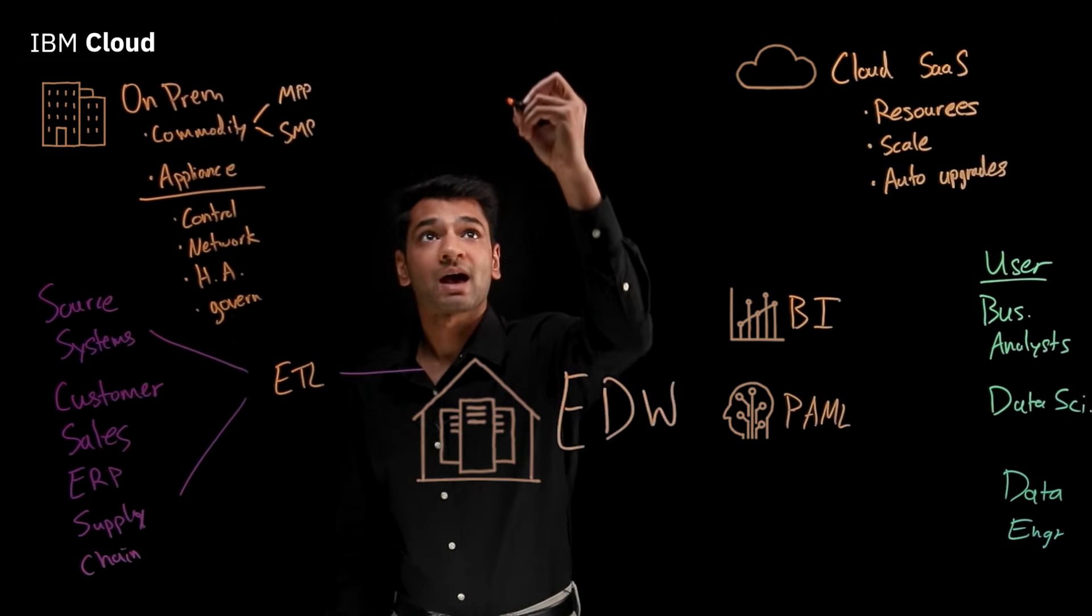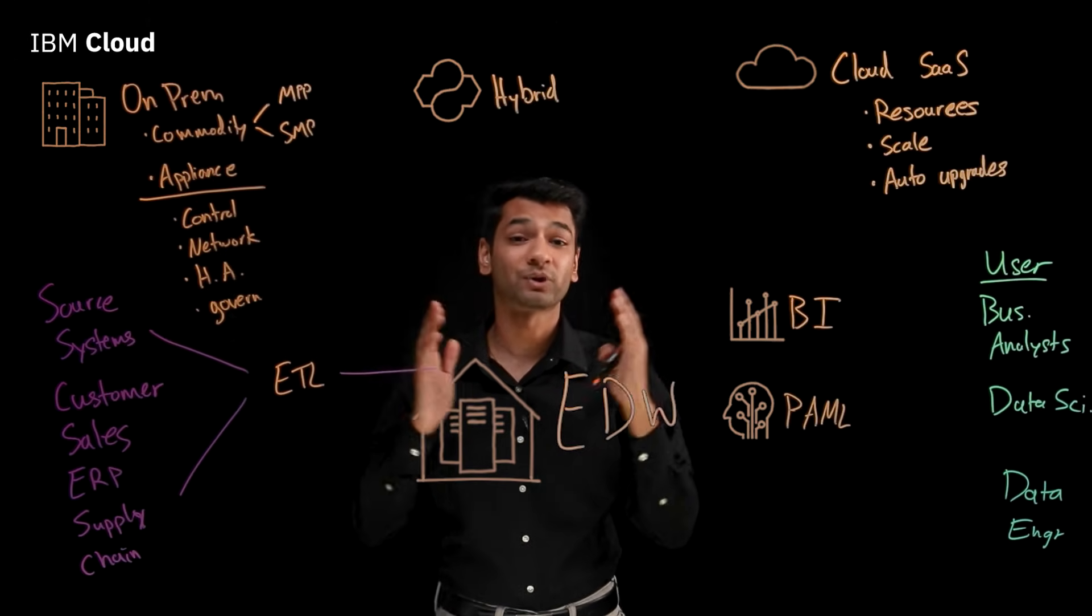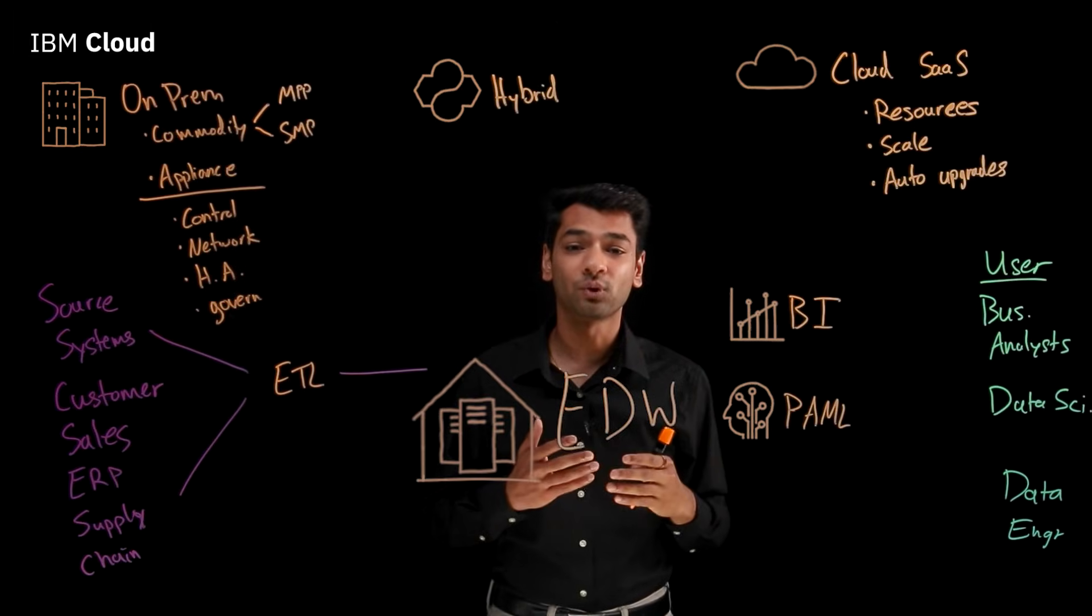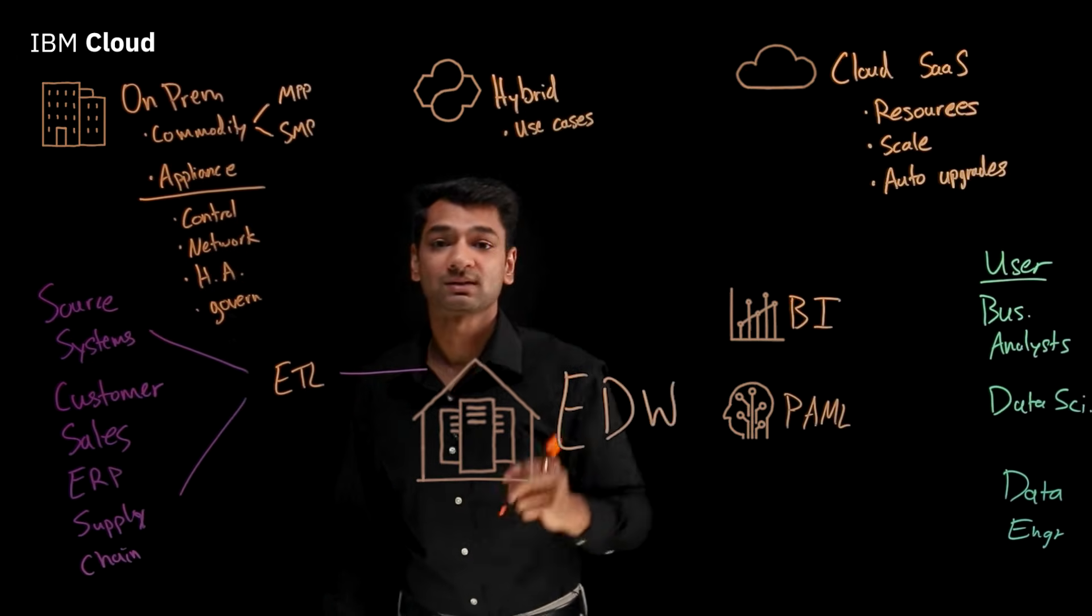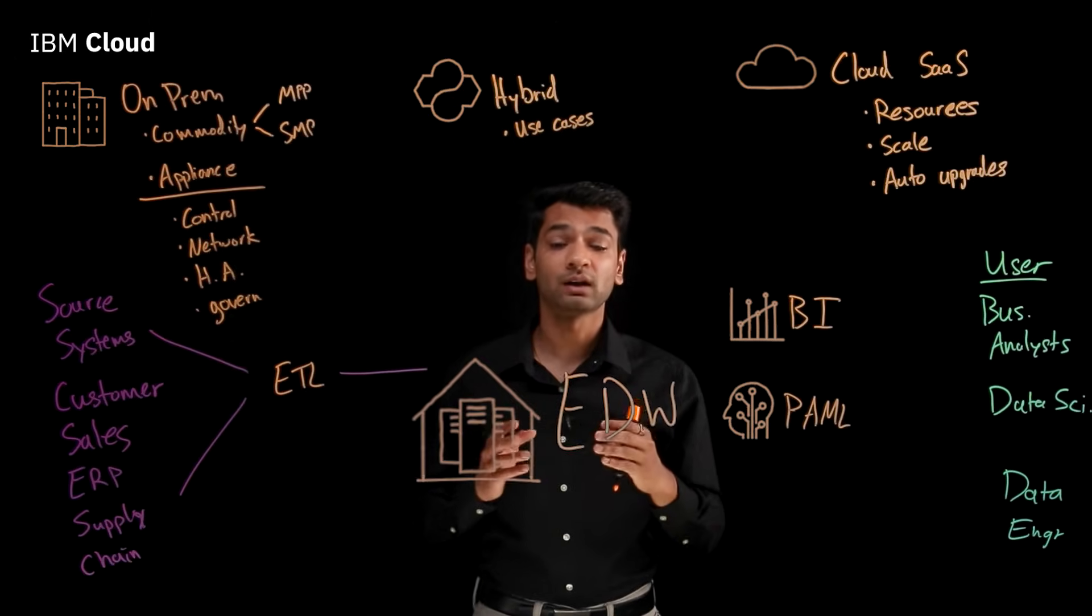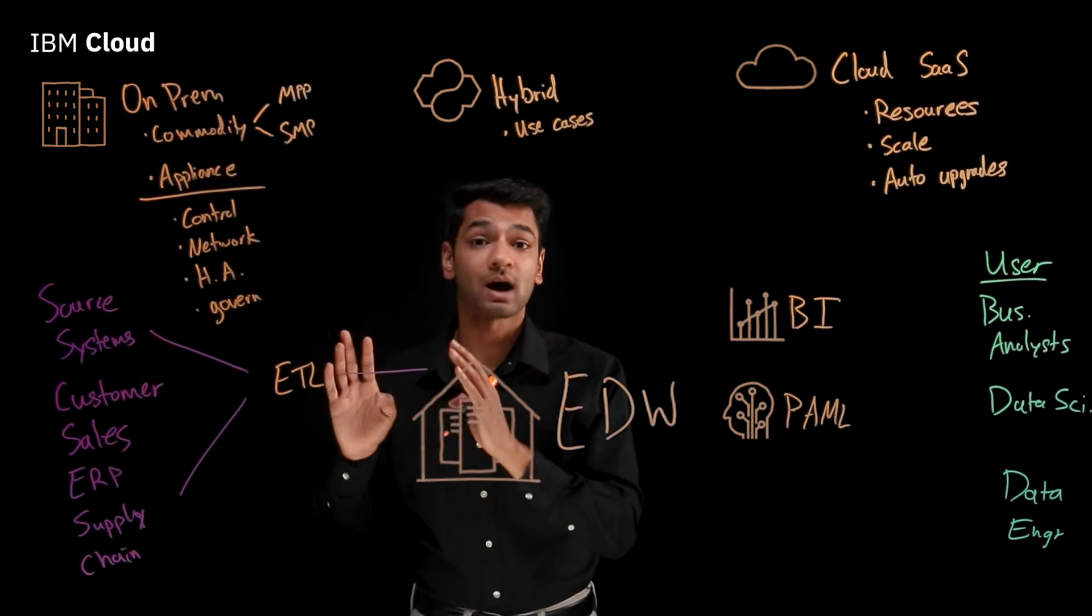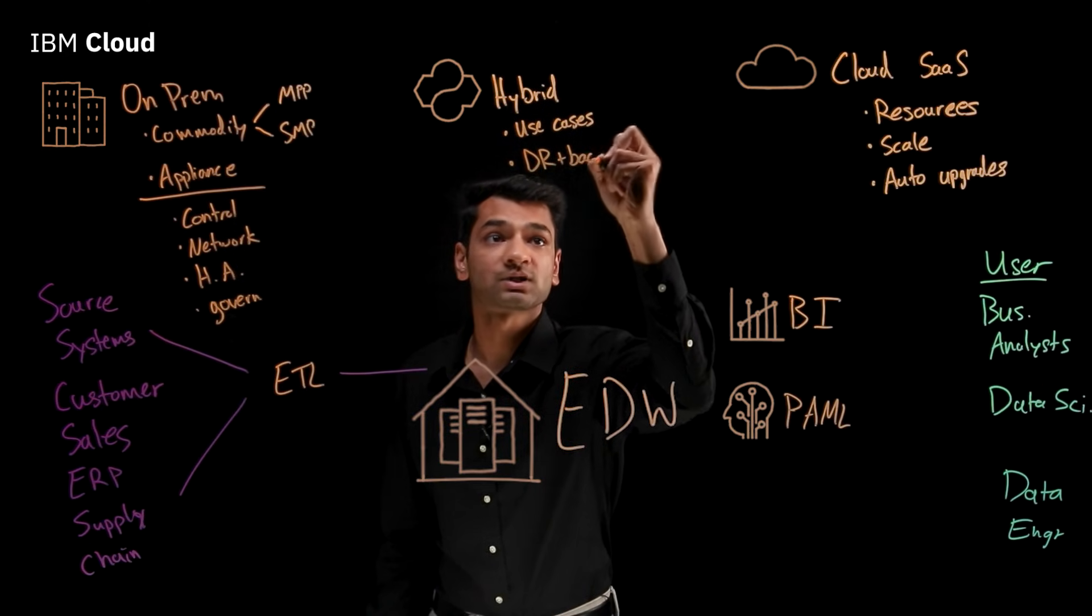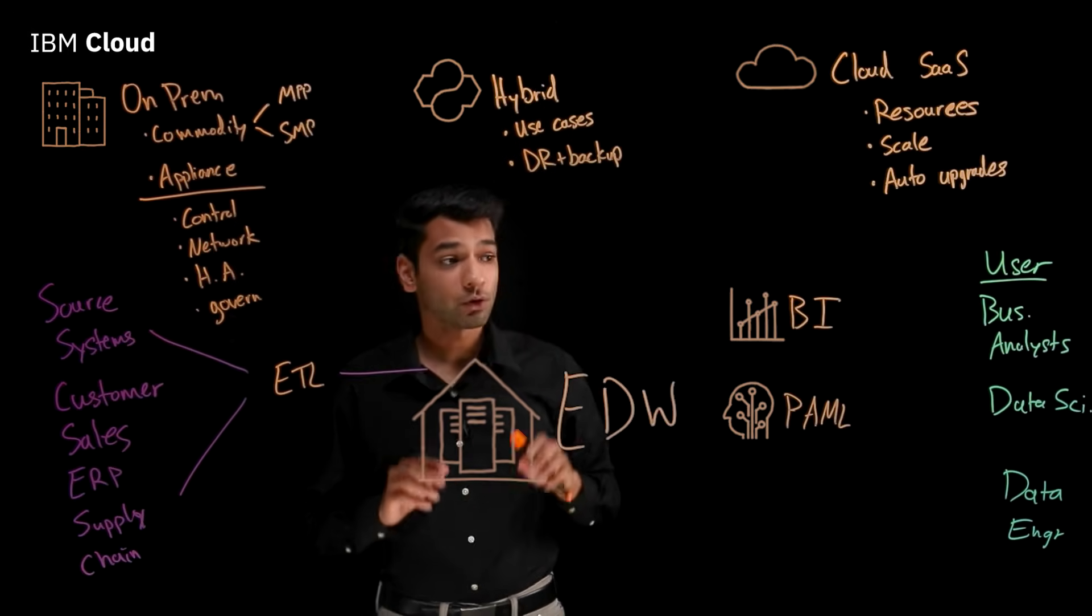The third option is actually a hybrid approach. This takes the best of on-prem and cloud and brings them together. A lot of enterprises choose to run both their on-prem and cloud data warehouses in conjunction. One benefit can be that this allows us to explore new use cases. As an enterprise, we may have certain data sources that were born in the cloud, so it can be beneficial to start leveraging a cloud data warehouse for analytics against those use cases while still maintaining their mission-critical workloads on-prem. Another benefit can be for a disaster recovery and backup scenario, where we'd use both our environments in conjunction for DR and backup reasons.